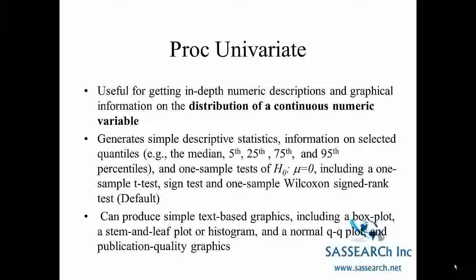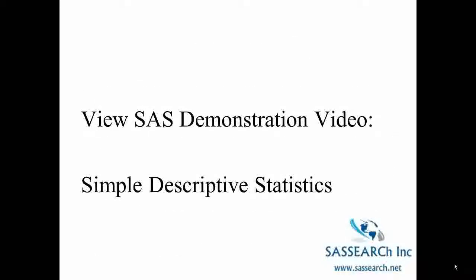PROC Univariate is useful for getting in-depth numeric descriptions and graphical information on the distribution of a continuous numeric variable. It generates simple descriptive statistics and information on selected quantiles — the median, the fifth, twenty-fifth, seventy-fifth, and ninety-fifth percentiles. It also produces one-sample tests by default, including a one-sample t-test, a signed test, and a one-sample Wilcoxon signed rank test. PROC Univariate can also be used to produce simple text-based graphics including a box plot, a stem and leaf plot or histogram, and a normal QQ plot, as well as publication quality graphics. So if you want to determine if your continuous variable has a normal distribution, PROC Univariate would be the most helpful procedure. Now view the SAS demonstration video, Simple Descriptive Statistics.